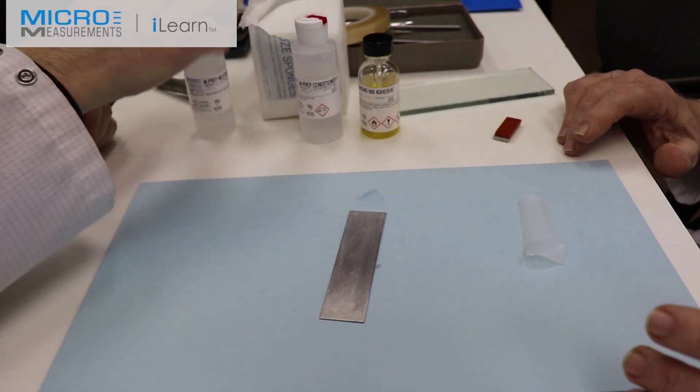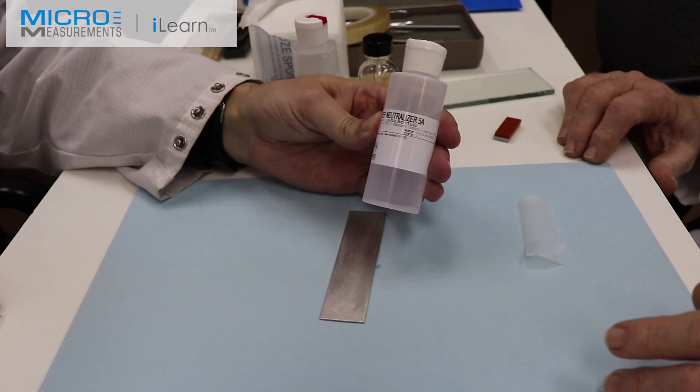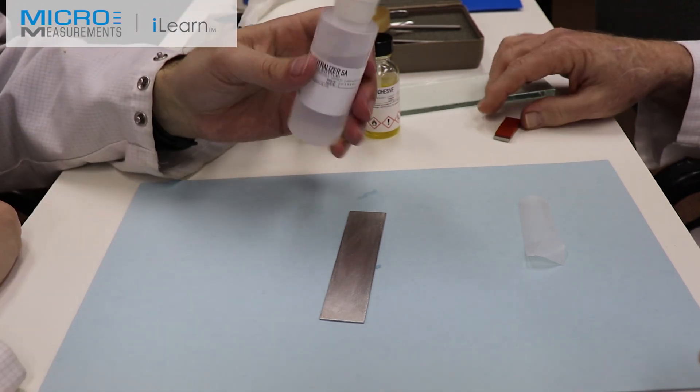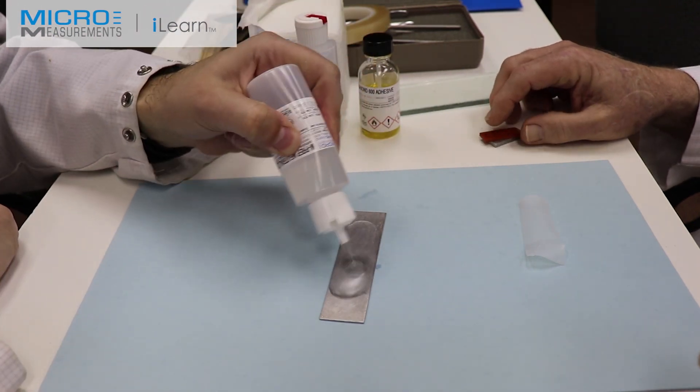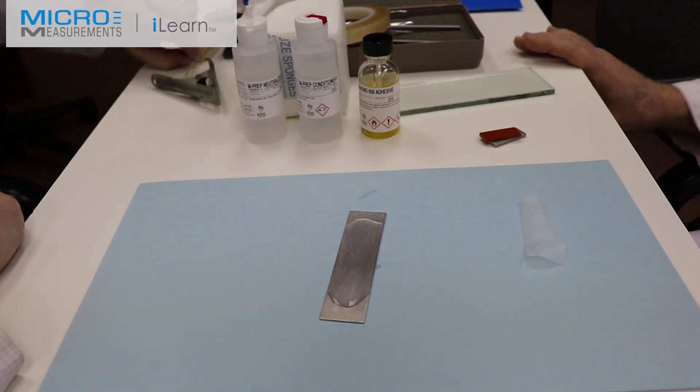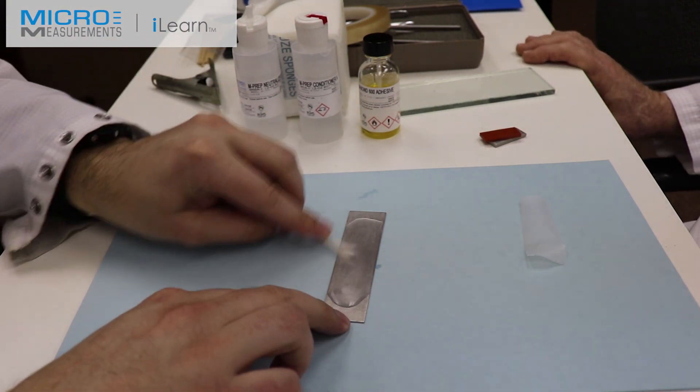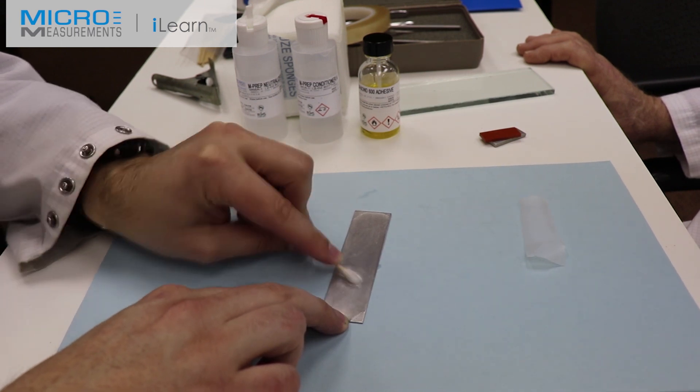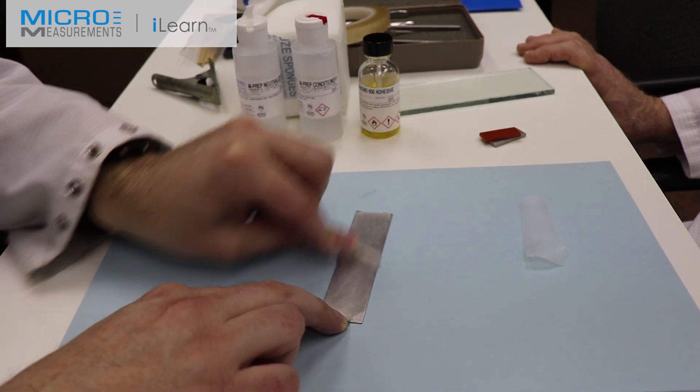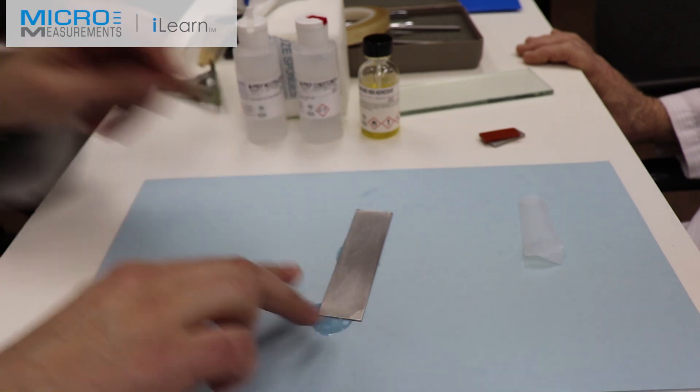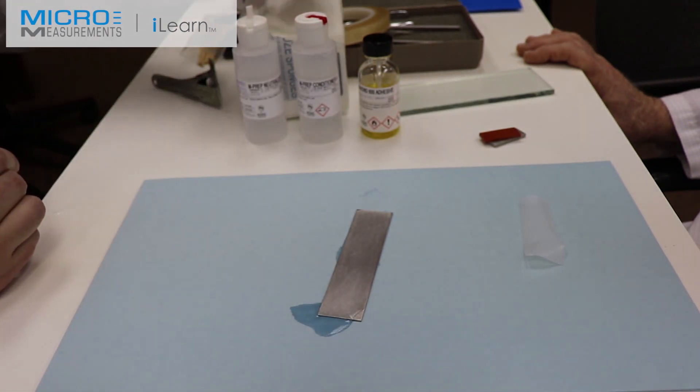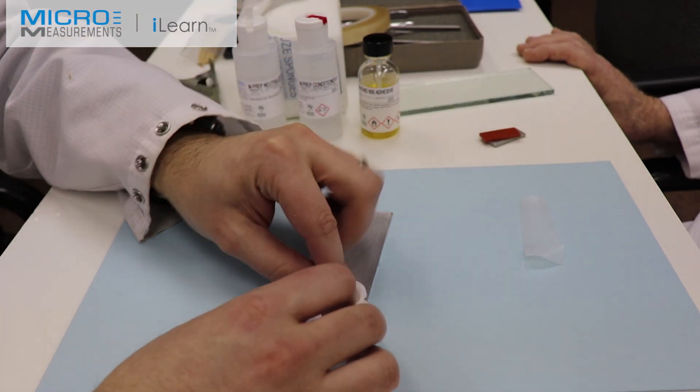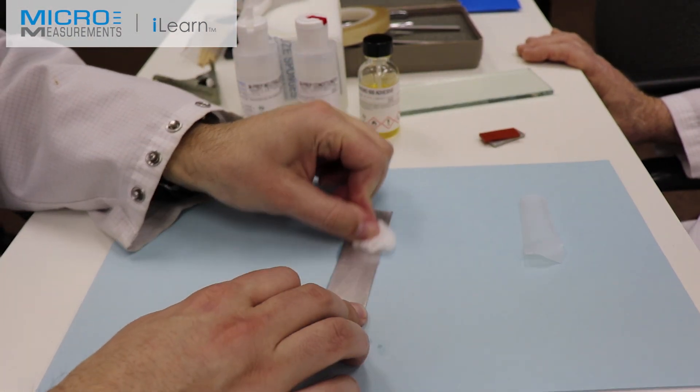The final step of surface preparation will be using the Neutralizer 5A, that's an ammonia solution, to bring the pH back to either a neutral or slightly basic condition. He's going to put a slug of the Neutralizer 5A on there, and using a cotton tip applicator, he's going to scrub the surface of his beam. He'll turn the cotton tip applicator over and look at it and see if it came out clean. He's going to use a single gauze sponge and absorb the excess material.